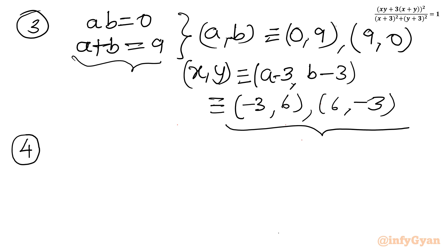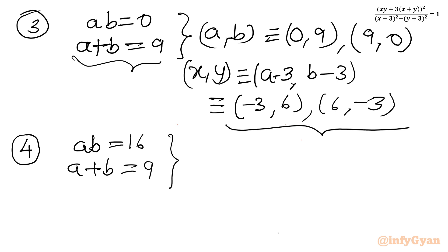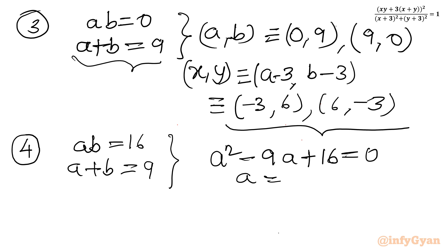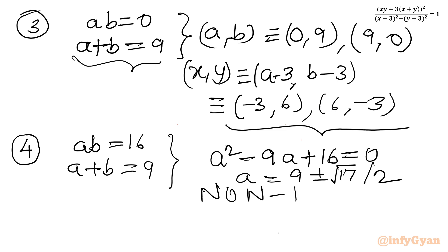For system 4, ab = 16 and a plus b = 9. Framing a quadratic: a² minus 9a plus 16 = 0. The discriminant is 81 minus 64 = 17, giving a = (9 ± √17) / 2, which are non-integer values. So we reject system 4.